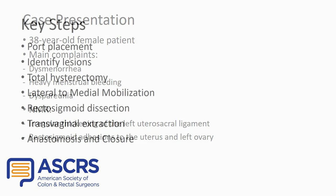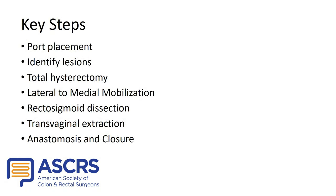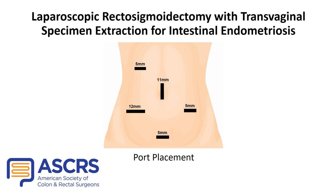A surgical approach was chosen to treat endometriosis. The main steps are: port placement, identify endometriotic lesions, total hysterectomy with transvaginal extraction, left paracolic gutter mobilization, splenic flexure partial mobilization, medial and posterior rectosigmoid dissection, transvaginal extraction of the intestinal segment, anastomosis, intraoperative air leak test, and closure. Here is the usual port placement for intestinal endometriosis.